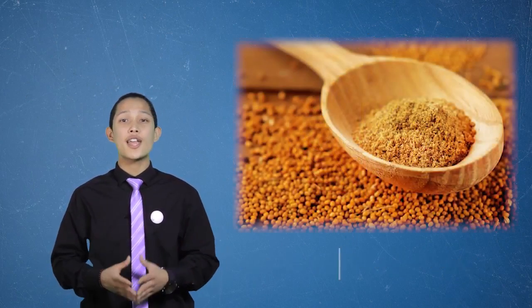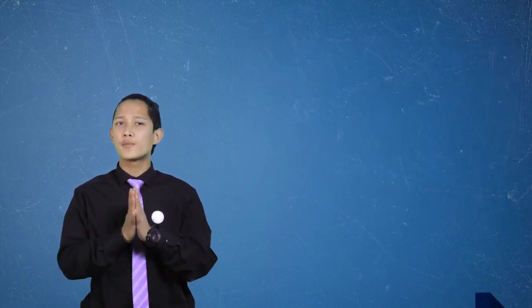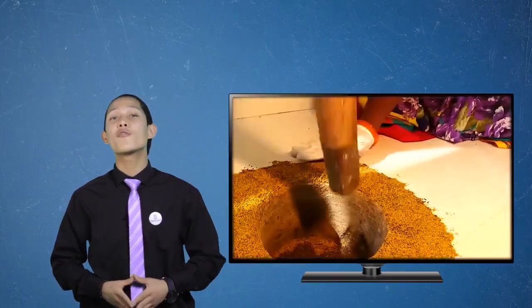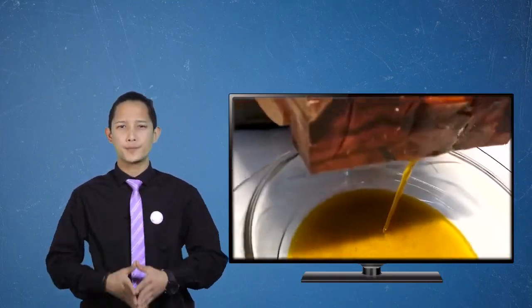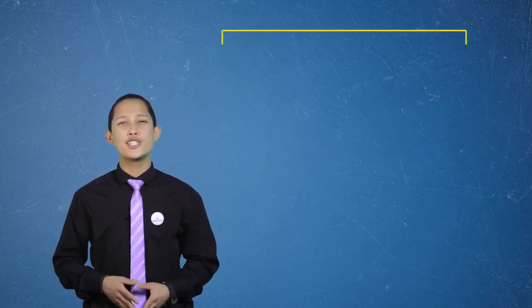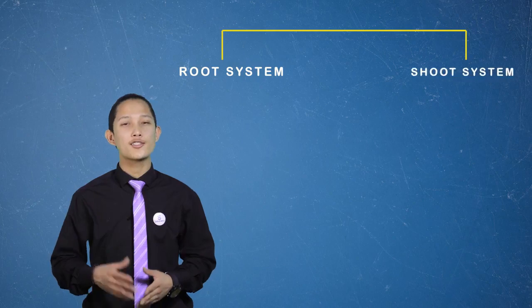Mustard seed is used as a spice. Well, I hope we all know that mustard plant is a flowering plant. The seeds of mustard plant can also be pressed to make mustard oil and the edible leaves can be eaten as mustard greens. The plant body is divided into two parts: root system and shoot system.